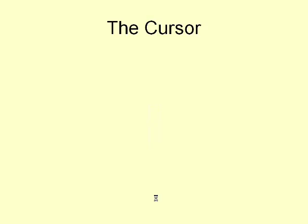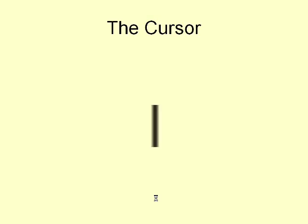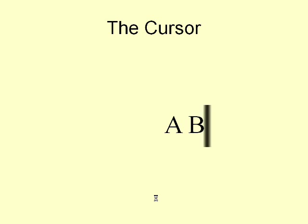When you enter text into the computer, the screen will show a little flashing line. This is called the cursor and marks the point where the next character will be written. After the character is written, the cursor moves forward so that the next character will be written after the previous one.